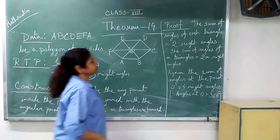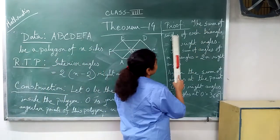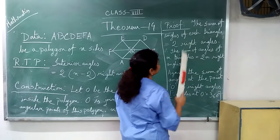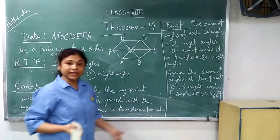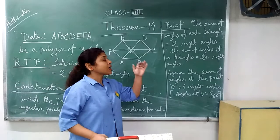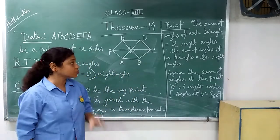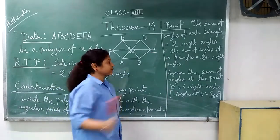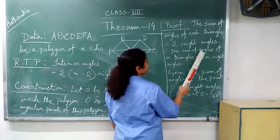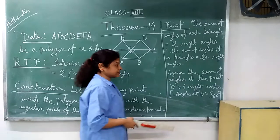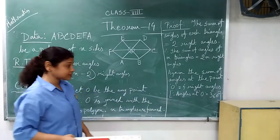Now, proof. The sum of angles of each triangle, you know, is 2 right angles. The sum of the 3 angles of a triangle is equal to 2 right angles. Therefore, the sum of angles of n triangles is equal to 2 into n right angles.